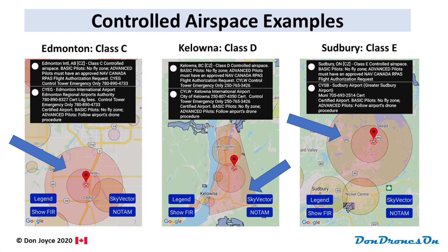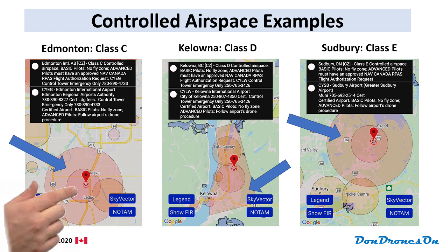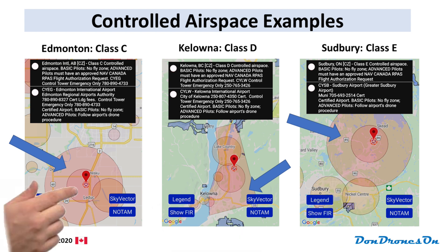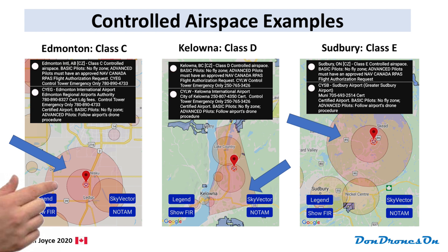Here are three examples of control zones — class C, D, and E — across Canada. Notice that the control zones are much larger than the three nautical mile drone keep-out zones around the airports themselves. Those keep-out zones are the smaller pink circles in these three examples. The control zone itself is usually much larger — seven nautical miles in radius — that's 13 kilometers for both Edmonton and Sudbury, even though Sudbury is a much smaller airport.